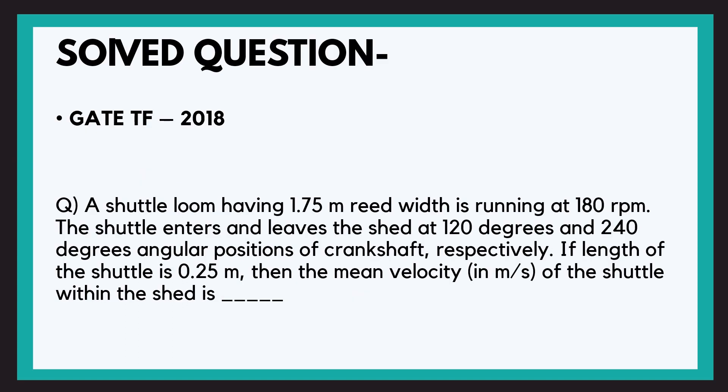So here I have a question that has already been in GATE examination 2018. So the question is: a shuttle loom having 1.75 meter reed width is running at 180 RPM. The shuttle enters and leaves the shed at 120 degrees and 240 degrees angular positions of crankshaft respectively. Now if the length of the shuttle is 0.25 meters, the mean velocity in meter per second of the shuttle within the shed is?